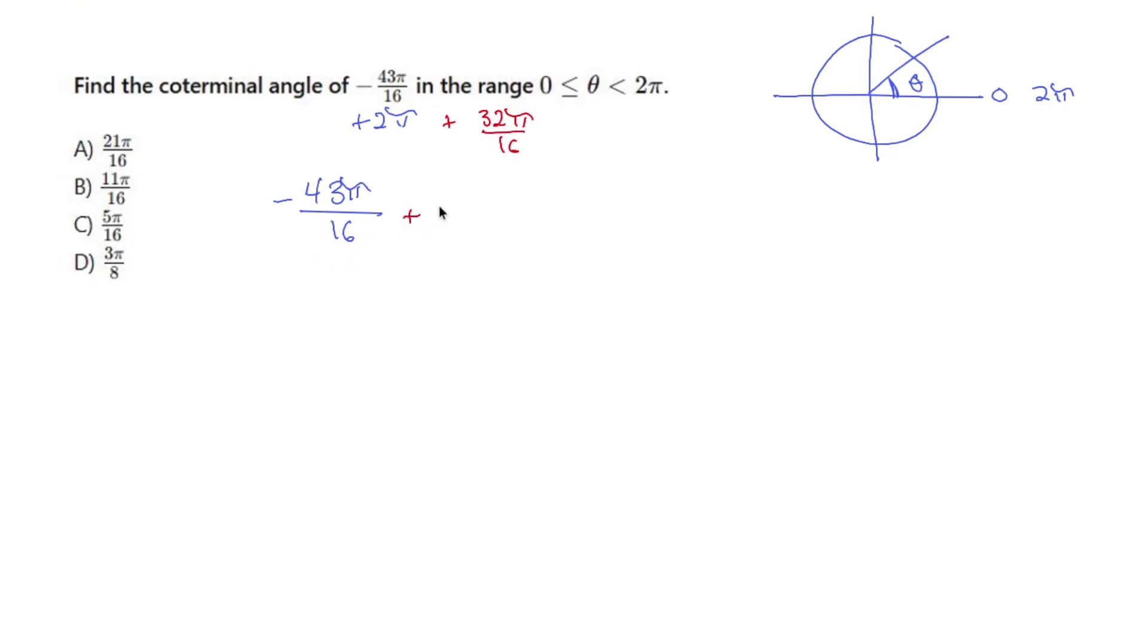I'm using common denominators. So let's add 32 pi over 16. By adding 32 pi over 16, that gets me negative 11 pi over 16.